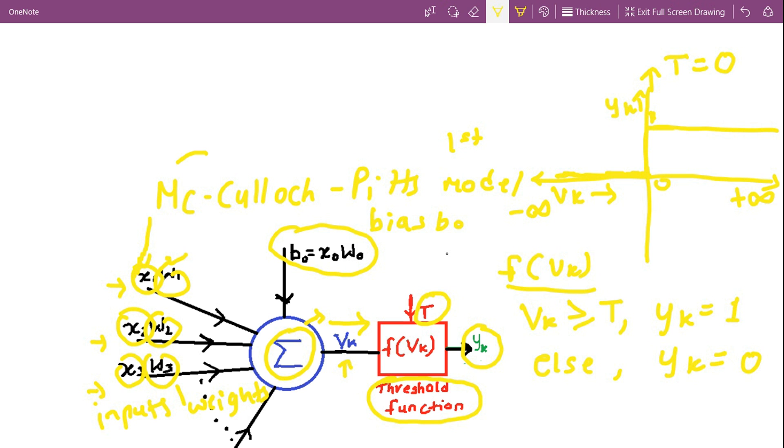So the McCulloch-Pitts model belongs to a class of neurons which are called binary threshold neurons. There are various other types of neurons like linear neurons, sigmoid neurons, and many such neurons which we shall discuss in the later section.